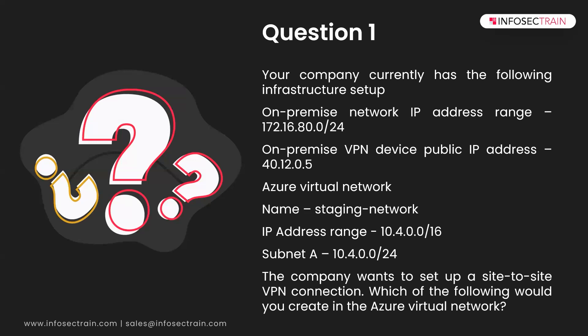The Azure Virtual Network IP address range is 10.4.0.0/16. Subnet A has the range 10.4.0.0/24. The IP address range is the wider range, while the subnet gives you 255 hosts. Networking concepts should be clear up to this point because they will help you answer this and the next question.